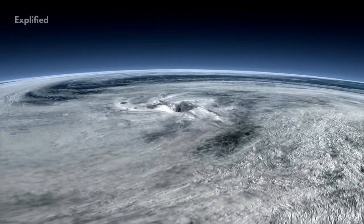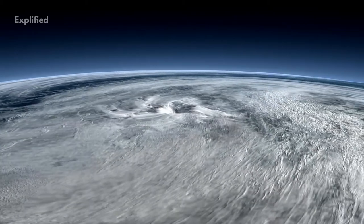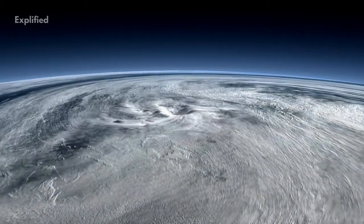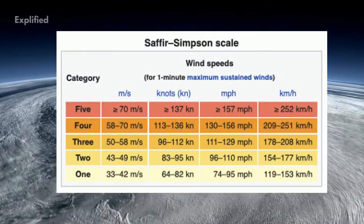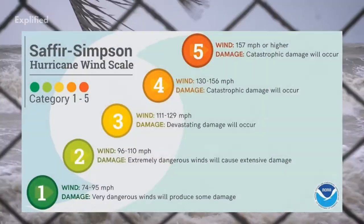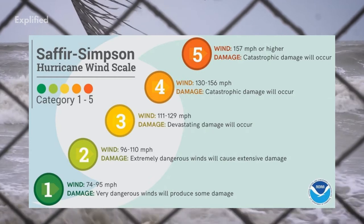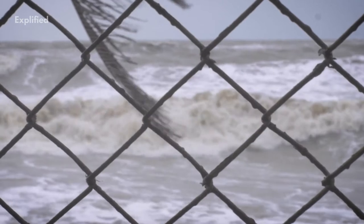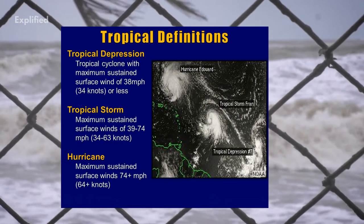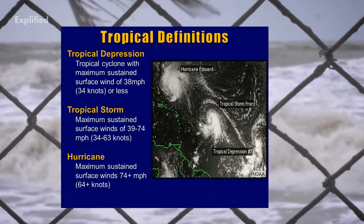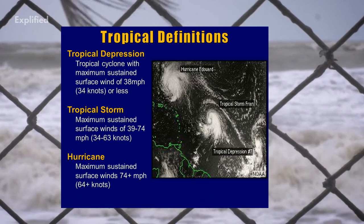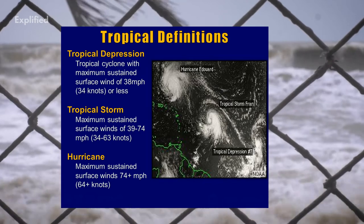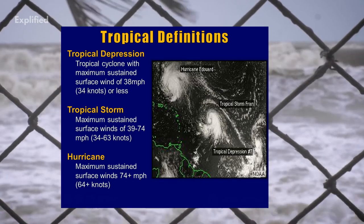Cyclones are divided into categories depending on the strength of the winds produced. There are many different classification scales, but one you may be familiar with is the Saffir-Simpson hurricane scale, used to describe storms in Hollywood movies. When the maximum speed of a cyclone is 63 km per hour, it is known as a tropical depression. When the maximum sustained speed is more than 63 km per hour, it is known as a tropical storm.